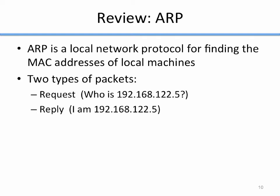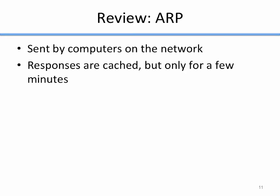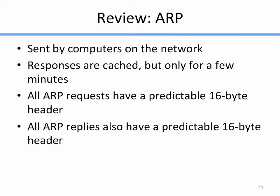So you have an ARP request — 'what MAC address has this IP?' — and an ARP reply — 'I have that IP.' ARP requests are sent by all computers on a local network, and a wireless access point effectively builds a wireless local network. When a machine makes an ARP request, it caches the results so it doesn't have to send one for every packet, but it only caches for a few minutes since IP-to-MAC associations can change. All ARP requests have a predictable 16-byte header — the first 16 bytes of any ARP request are very predictable based on the network. The same is true for ARP replies.